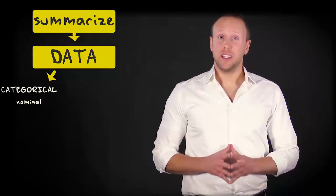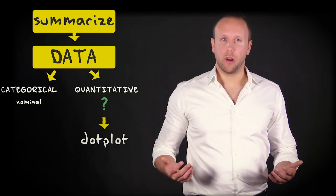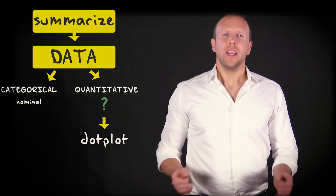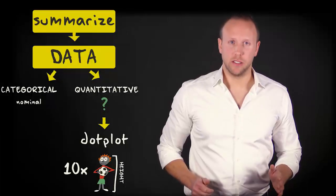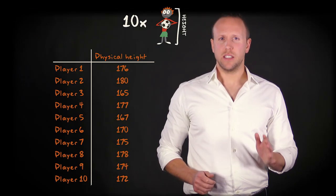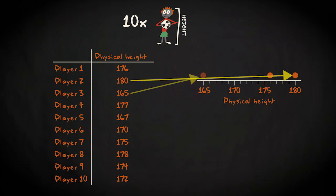How can we summarize data if we are dealing with a quantitative variable? One possibility is with a dot plot. The idea is easy. Imagine you have information about the physical height of 10 football players expressed in centimeters. This is the data matrix. First, you draw a horizontal line and label the possible values on it in regular intervals, like this. Next, for each observation you place a dot above its value on the horizontal line — so here, here, here, and here.